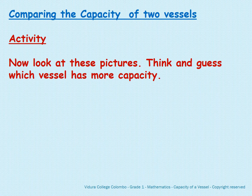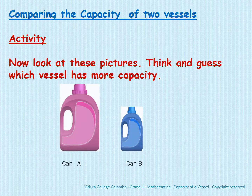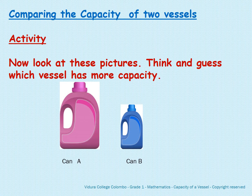Comparing the capacity of two vessels. Now look at these pictures. Think and guess which vessel has more capacity — Can A or Can B. Can A is big and holds more capacity. Can B is small and holds less capacity.